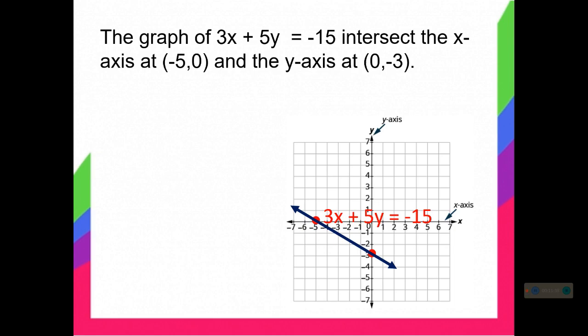That is how you graph a linear equation using the x and y intercepts. To recall: the x intercept is the value of x when you let y equal to 0. The y intercept is the value of y when you let x equal to 0. You rewrite the given intercepts as ordered pairs — the x intercept is in the form (A, 0) and the y intercept is in the form (0, B).